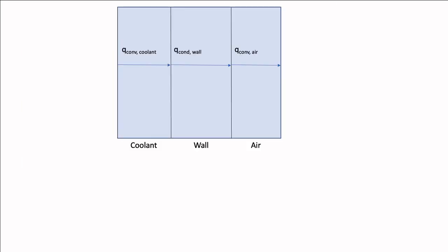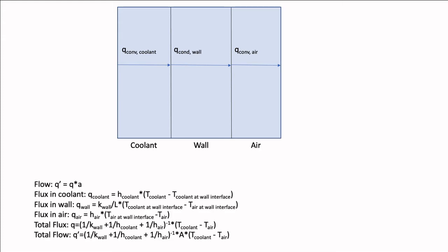We can model the heat transfer of a radiator as a progression of convection to conduction to convection again. Modeling with one-dimensional steady heat flow, we know first and foremost that for a radiator with area A, the heat flow Q' equals Q times A, where Q is the heat flux. The heat flux is divided into three sections for a simplified radiator: the convective heat flux in the coolant phase, the conductive heat flux in the wall phase, and the convective heat flux in the air phase.